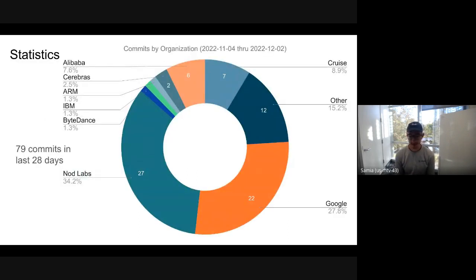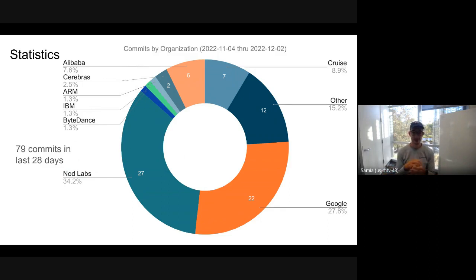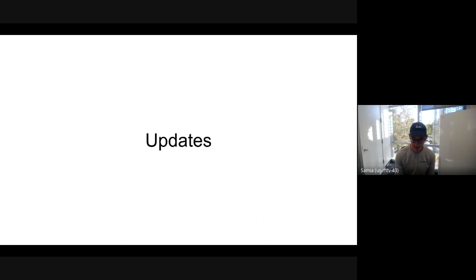Here are some statistics on the commit activity in the last four weeks, since November 4th. We've had 79 commits in the last 28 days, which is quite nice. It's really nice to see the widespread contributors to TorchMLIR, so thank you everyone who has been contributing in the last four weeks.